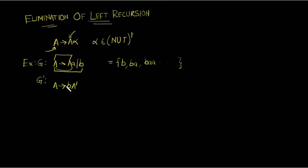What did we do? We first made the production to generate B and concatenated this A prime to generate all the A's to get the same language back.